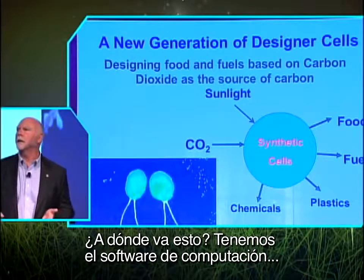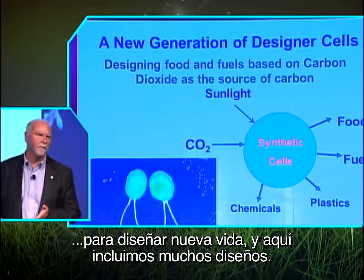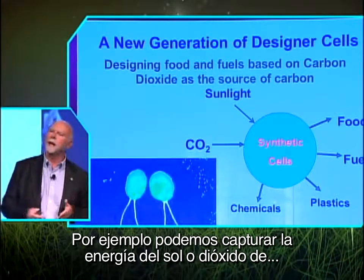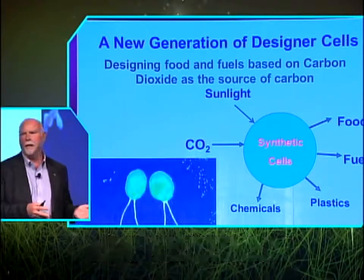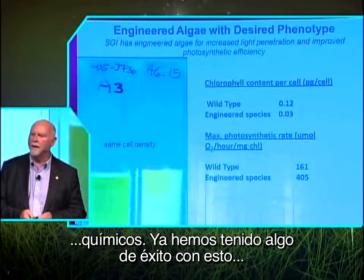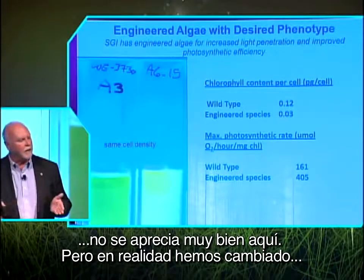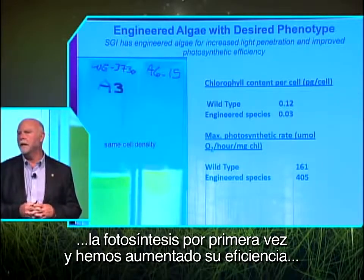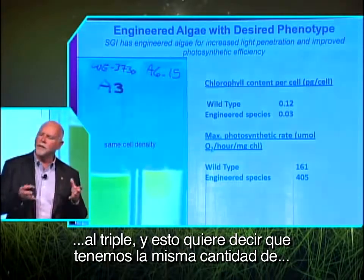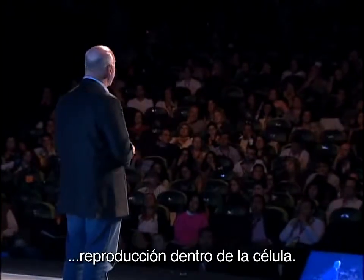So where is this going? We now have computer software to design new life software. We're trying to design new cells to do a number of things, including capture energy from sunlight, capture carbon dioxide to make new foods, fuels, and chemicals. We've had some success with this. We've actually changed photosynthesis for the first time, increasing its efficiency by threefold — meaning for the same amount of sunlight and the same number of photons, we get far more energy produced in the cell.